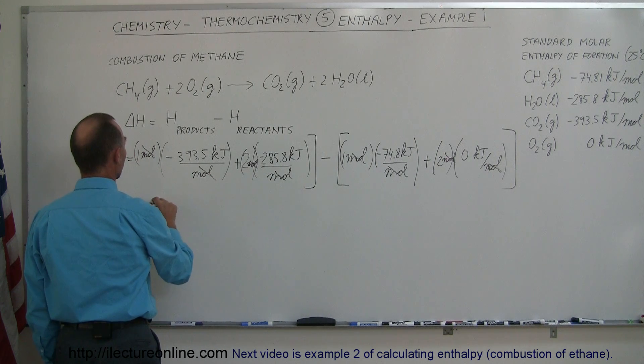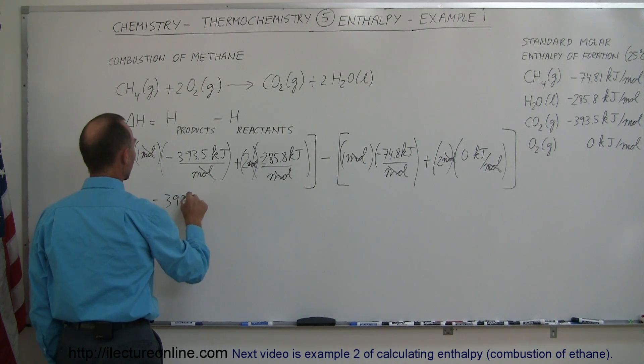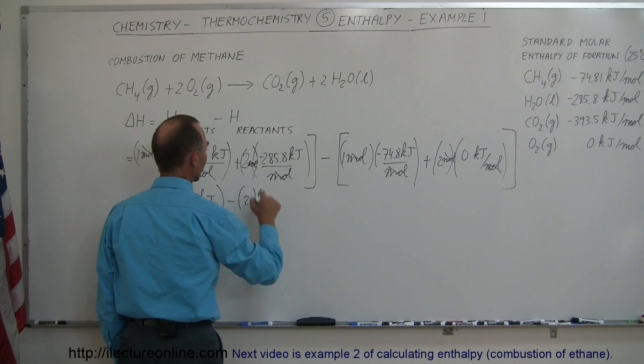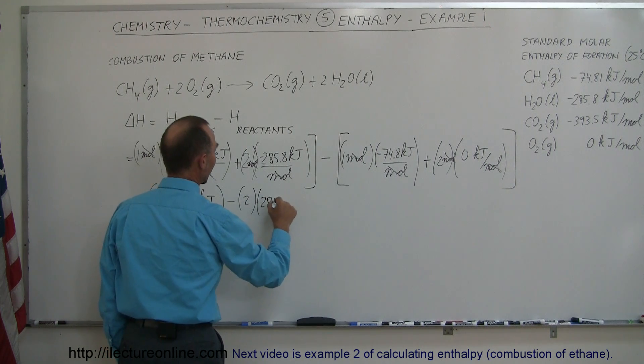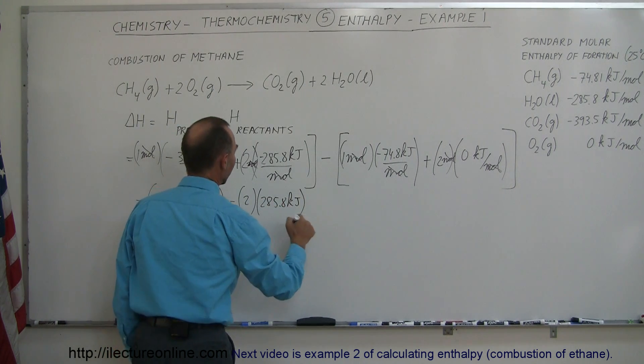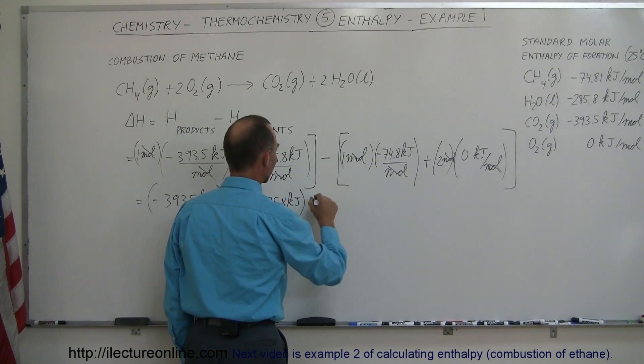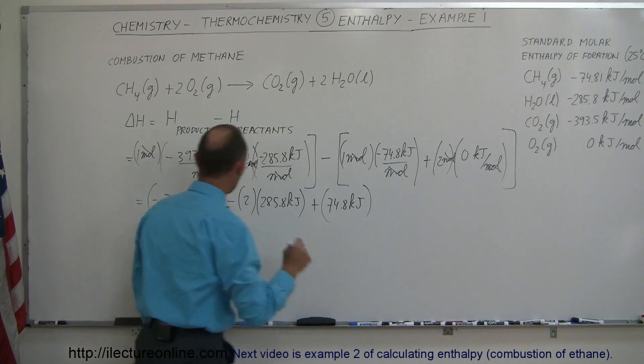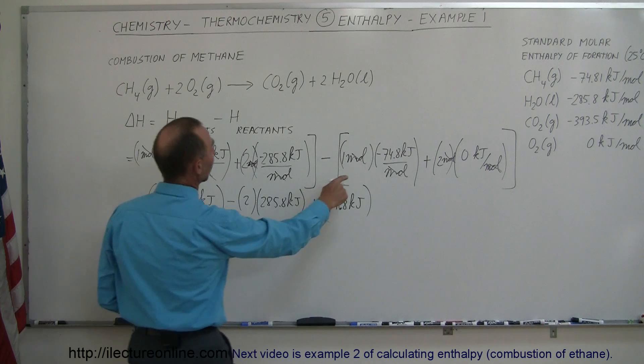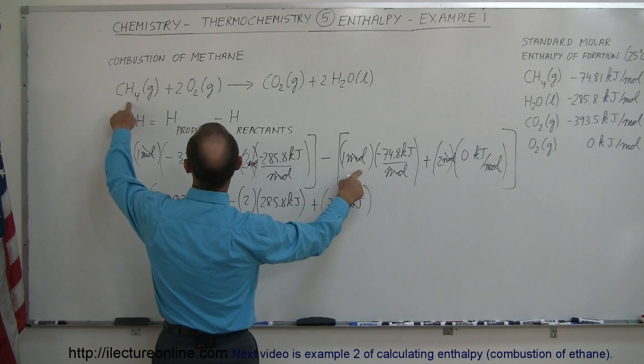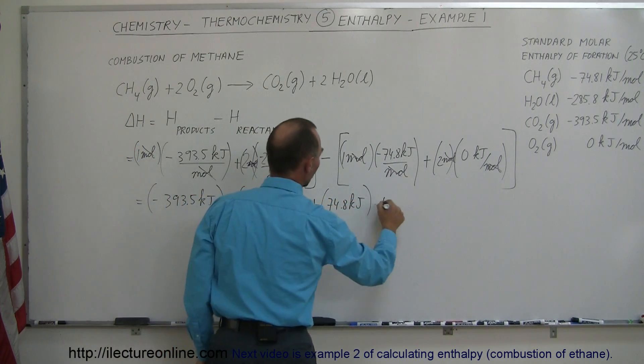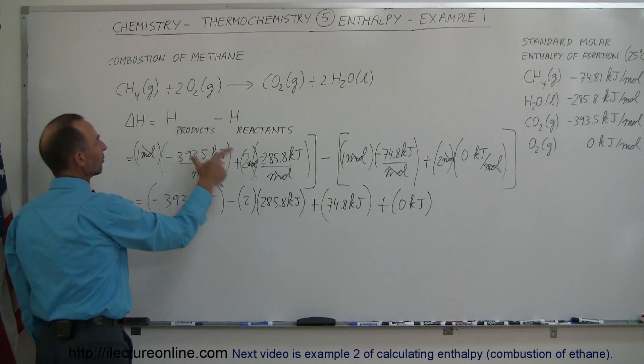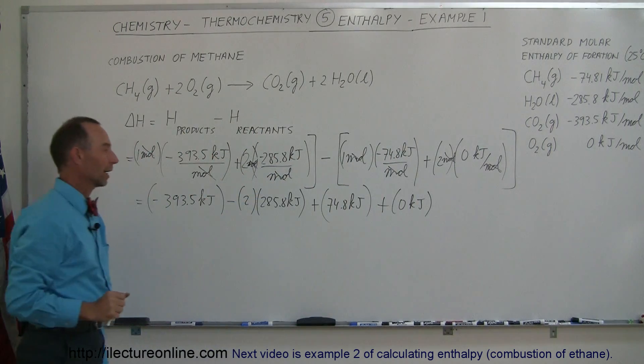So in the end, this is equal to minus 393.5 kilojoules, minus 2 times 285.8 kilojoules, and then the minus times the minus becomes plus 74.8 kilojoules. There we go. So recognize this, we only have one methane, we have two oxygens, so plus 0 kilojoules. So notice this is the enthalpy of the products, minus the enthalpy of the reactants.